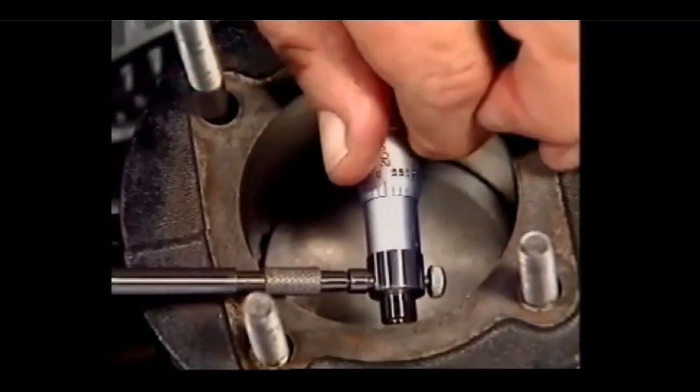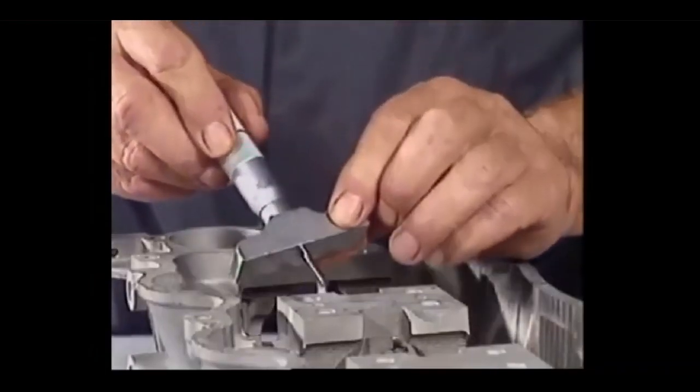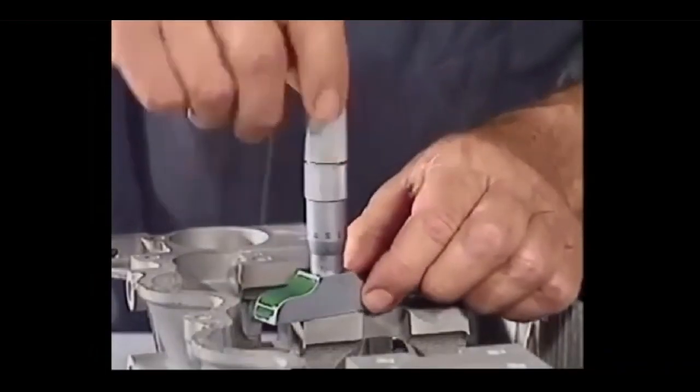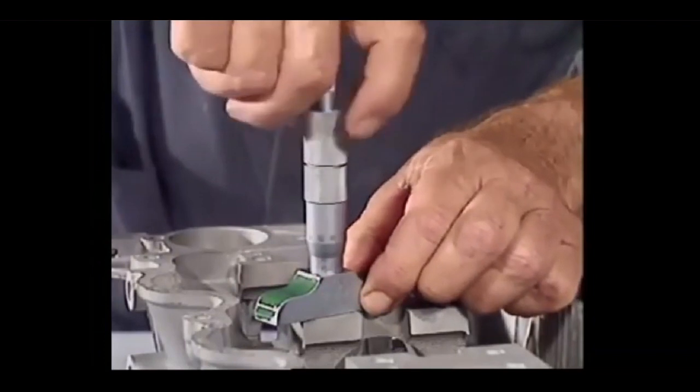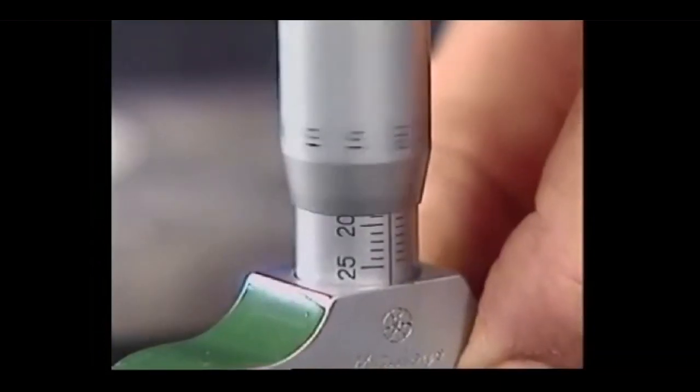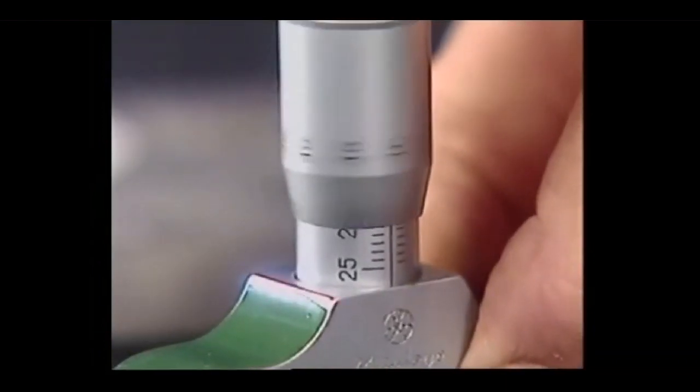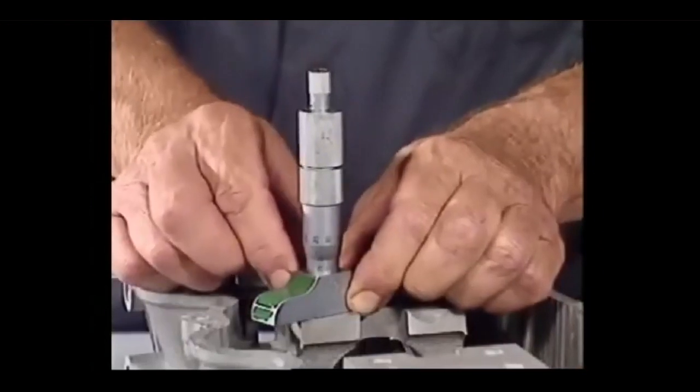For inside measurements, this inside micrometer works on the same principles as the outside micrometer, and so does this depth micrometer. They give a very accurate readout of even the tiniest movement of a very finely threaded spindle.